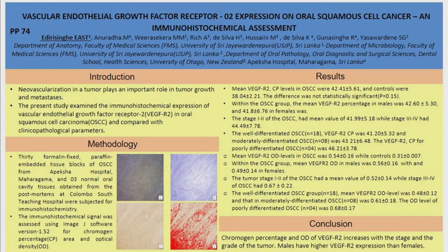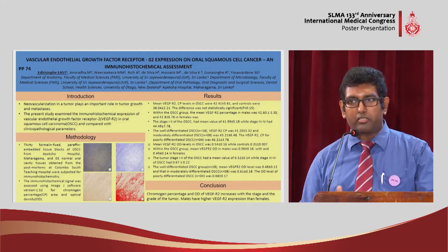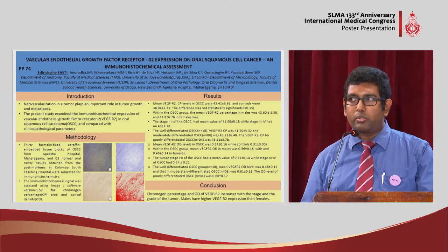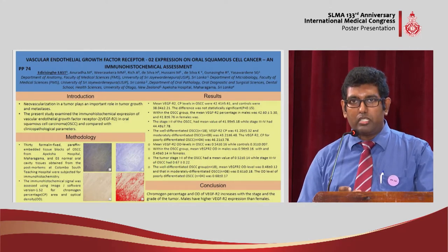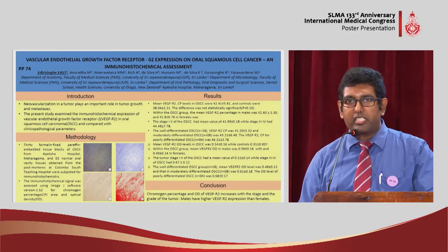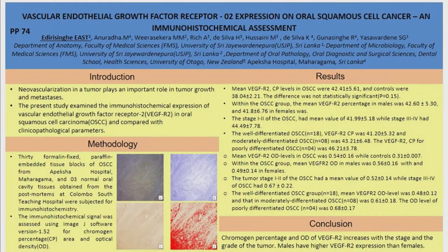There are two aspects to this analysis. We looked at the chromogen percentage — used for immunohistochemical staining — as well as optical density. For chromogen percentage, we observed an elevation in cancer tissue compared to control samples, but that elevation was not statistically significant. We also found that males had an elevation compared to females.